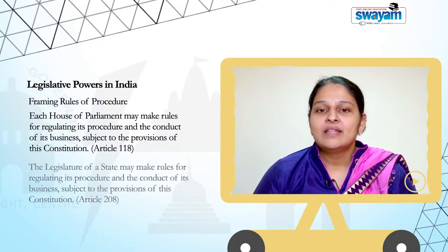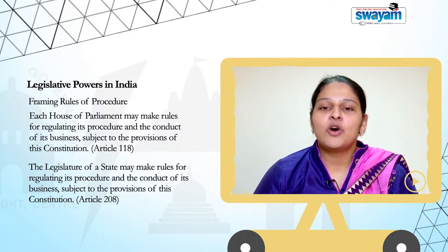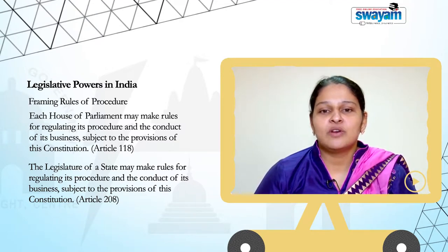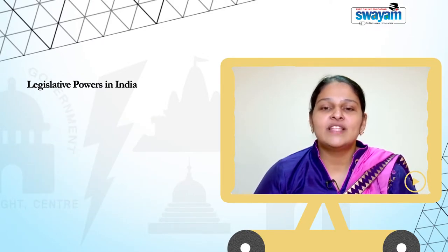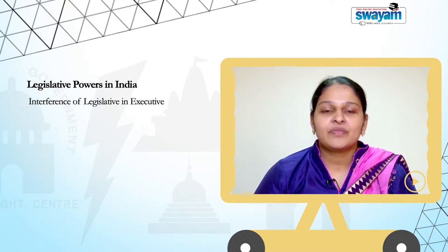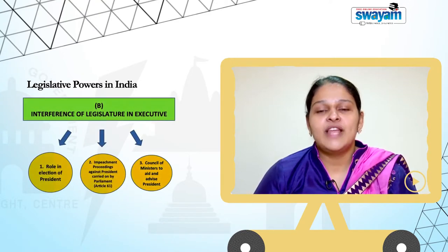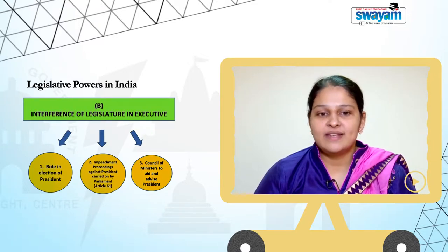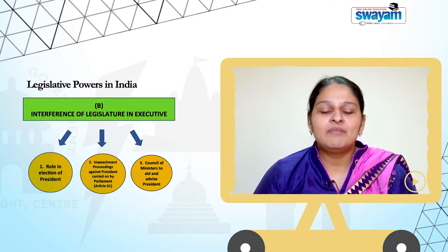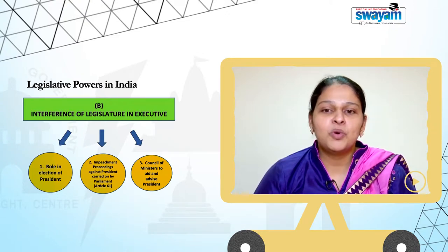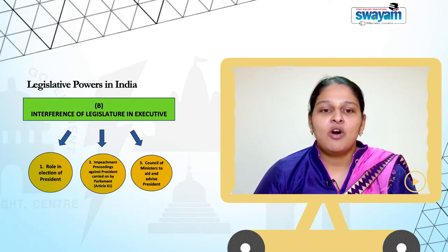The second aspect of legislative powers in India is the interference of legislature in executive. First, the role in election of the President. Article 54 provides that the President shall be elected by the members of an Electoral College consisting of the elected members of both Houses of Parliament and the elected members of the Legislative Assemblies of the States.